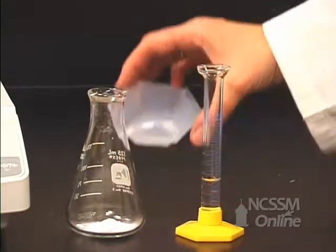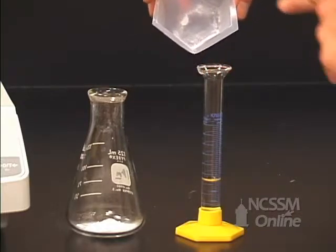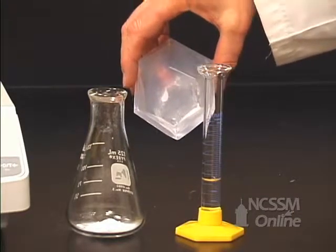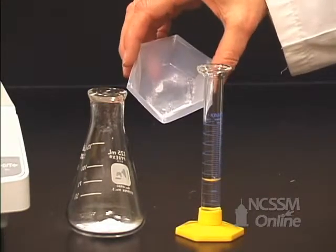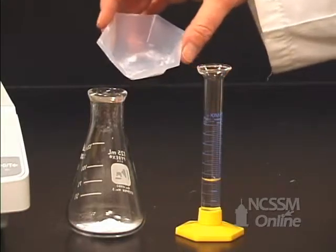Now we want to add between 4 and 5 milliliters of the liquid acetic anhydride. As you can see, there's a little of our salicylic acid in our weighboat.